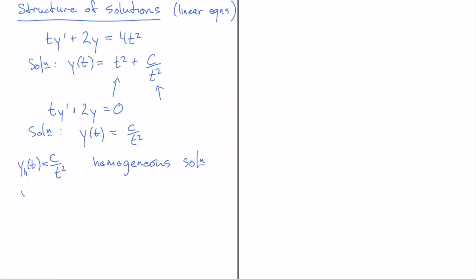And we call the other piece, t², a particular solution. That particular solution will change as we change the g(t), the inhomogeneous term on the right-hand side.